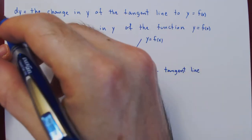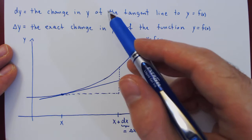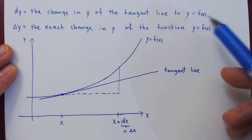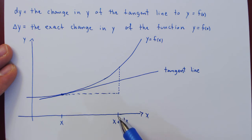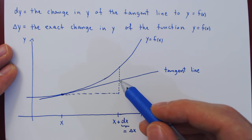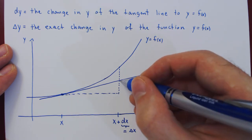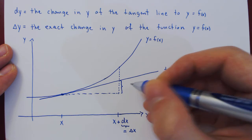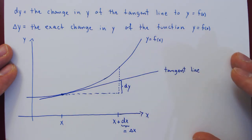Let's first consider dy, which is the change in y — the vertical change of the tangent line to the function. As x goes from x to x plus dx, the y value of our tangent line goes from here up to here. So this change right here is the vertical change in our tangent line. This is dy.